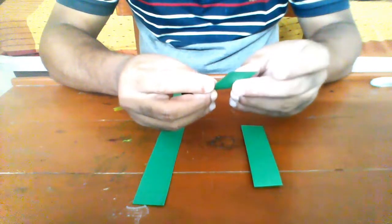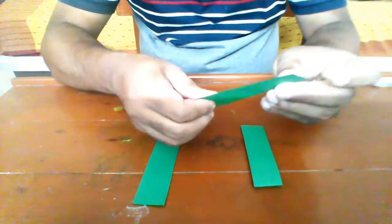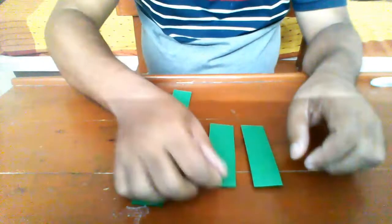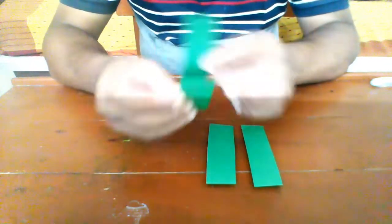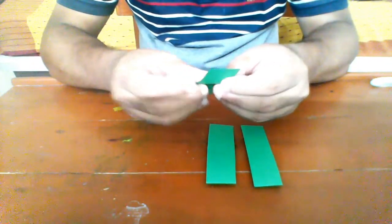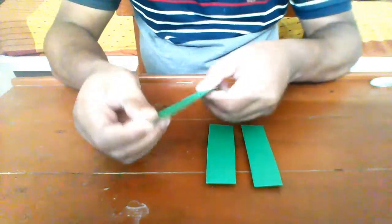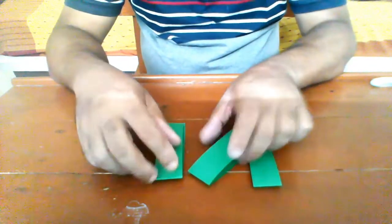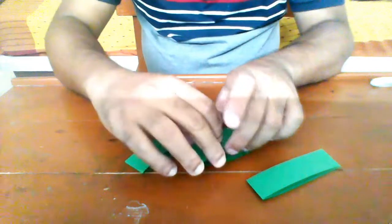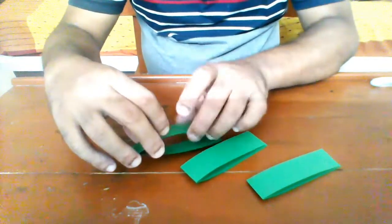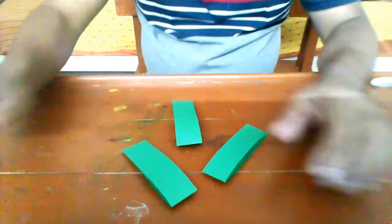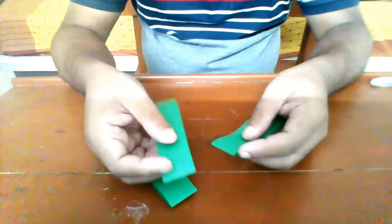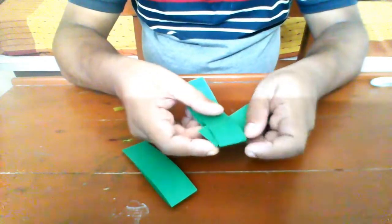Now we have to weave the three pieces into one another. So put one piece loop into the other piece so that it is weaved through the paper.